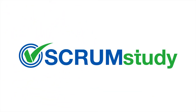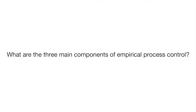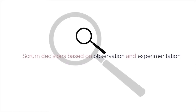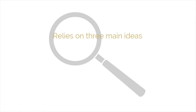Welcome back to Module 2, Scrum Principles. In this session, we'll see how decisions are made in Scrum and what the three main characteristics of empirical process control are. In Scrum, decisions are based on observation and experimentation rather than on detailed upfront planning. Empirical process control relies on three main ideas of transparency, inspection, and adaptation. We'll now discuss these three main ideas with the help of a few diagrams.